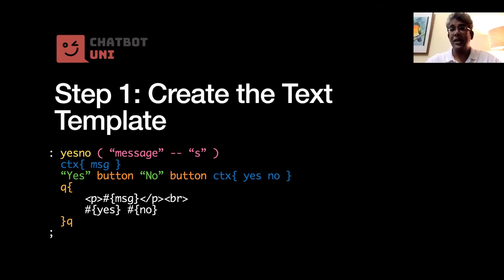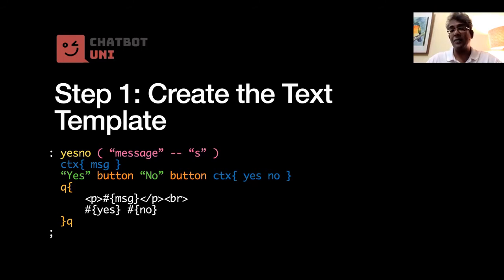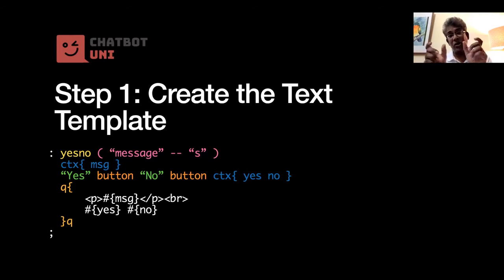The yes-no word first binds the message to a context variable — the blue CTX bracket binds the message text to a variable called 'msg'. The third line creates two buttons, a yes button and a no button, and binds them to two more context variables called 'yes' and 'no'. So altogether we have three context variables: the message itself and the two buttons. Finally, these three context variables are inserted into the code — the message goes between paragraph tags, there's a BR for a new line, then the yes and no buttons.